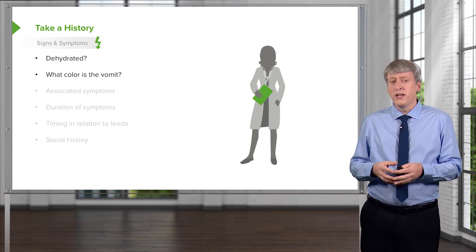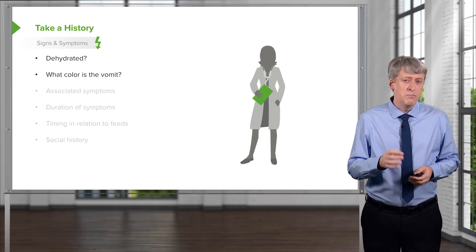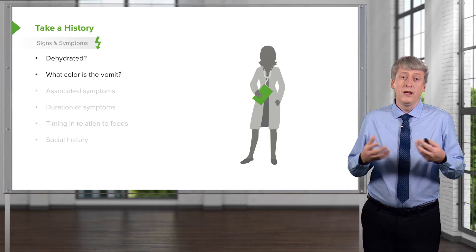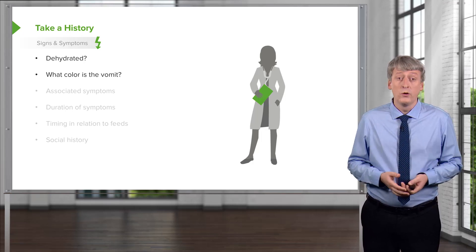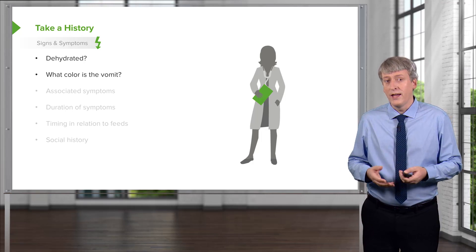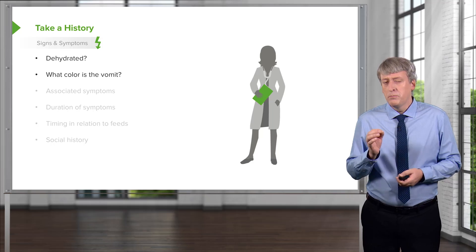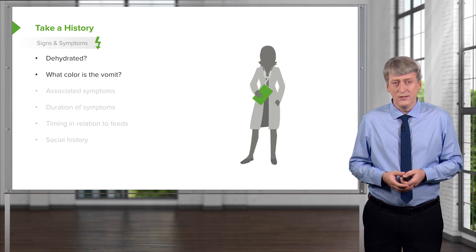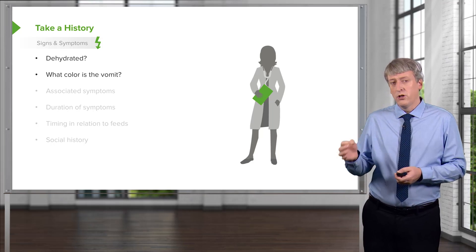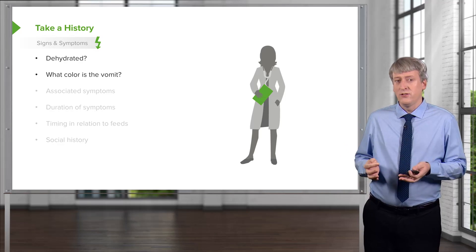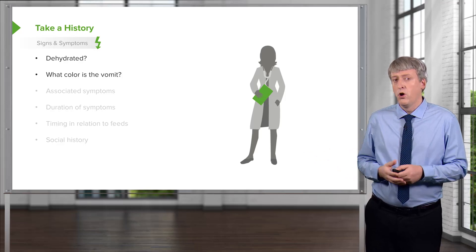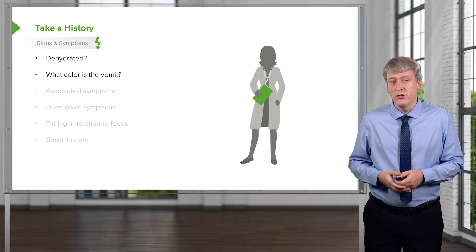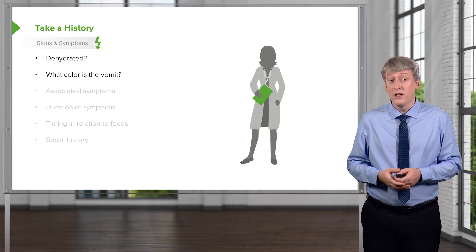It's important to assess what the color of the vomit is, especially in babies. Bloody emesis may be indicative of something in the esophagus like Mallory-Weiss tears or problems in the stomach like gastritis. In babies, green emesis may indicate bilious emesis, which in infants may be indicative of a malrotation of the intestines — a possible surgical emergency.